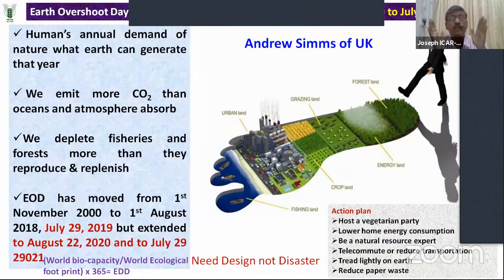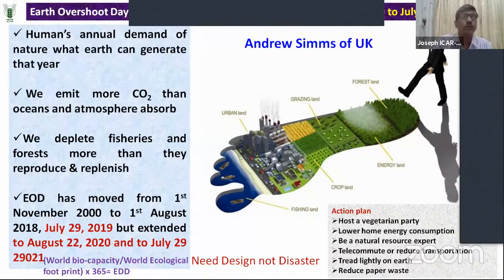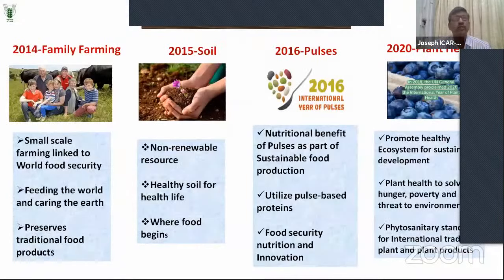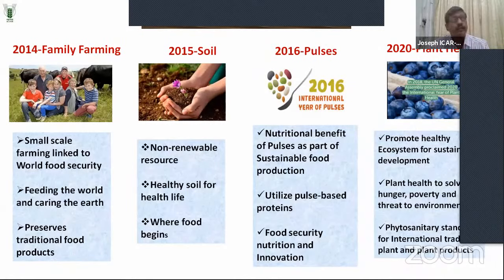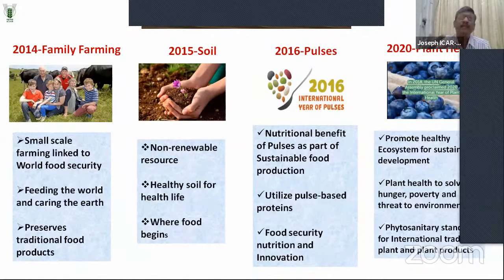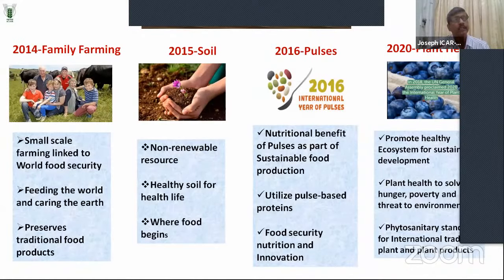We need a kind of design, not disaster. Disaster is the earth overshooting, but we need a design to bring down resource depletion. Even in the global scenario, agriculture is on the back foot. In 2014, the United Nations proclaimed the International Year for Family Farming — triggering family care to feed the nation and the entire world. All farm families should have a backyard kitchen, backyard nursery, or backyard farmyard system so that they produce something. In 2015 came the International Year for Soil, because healthy soil is the backbone of all resources.